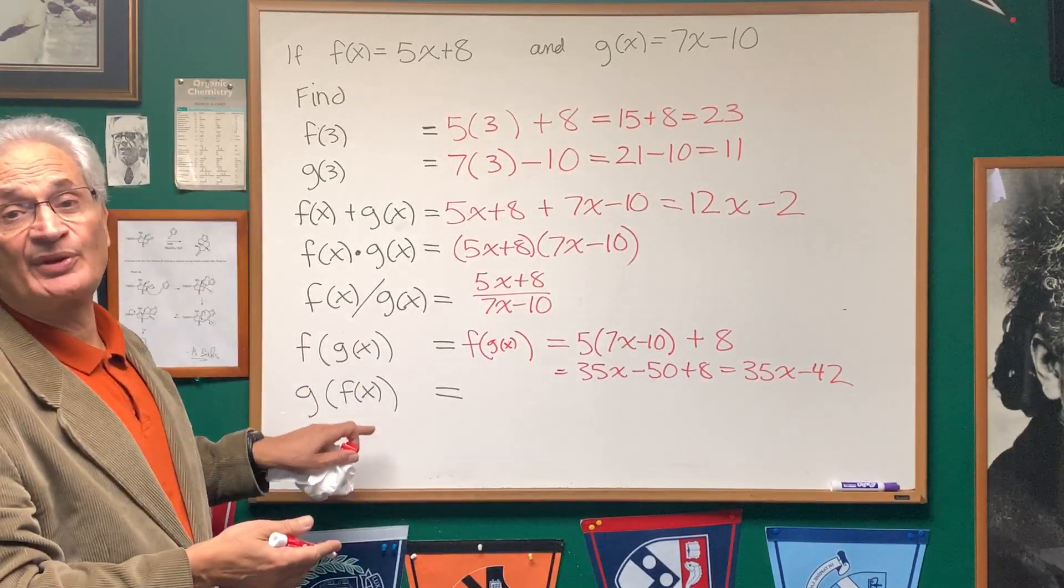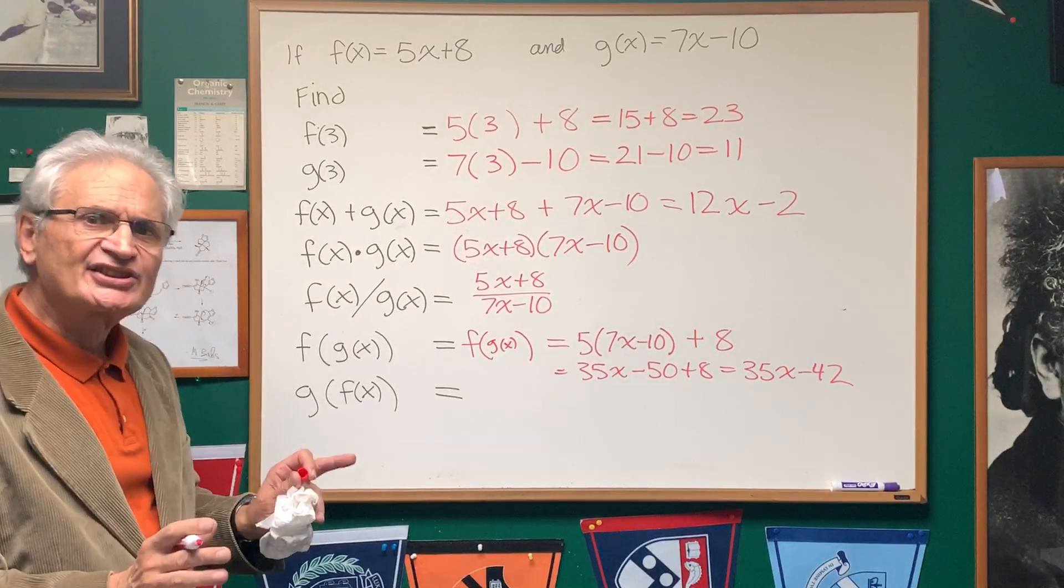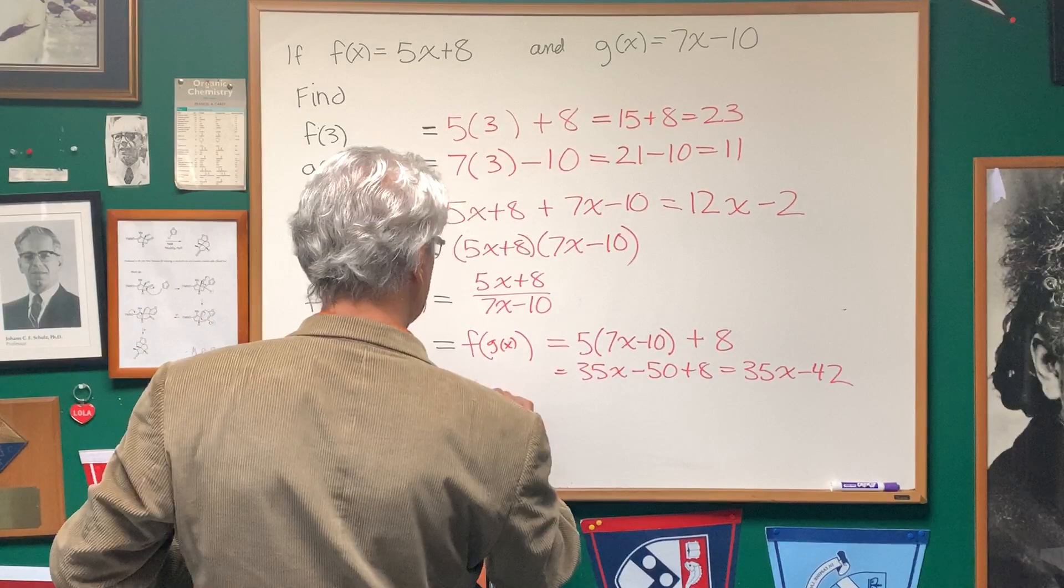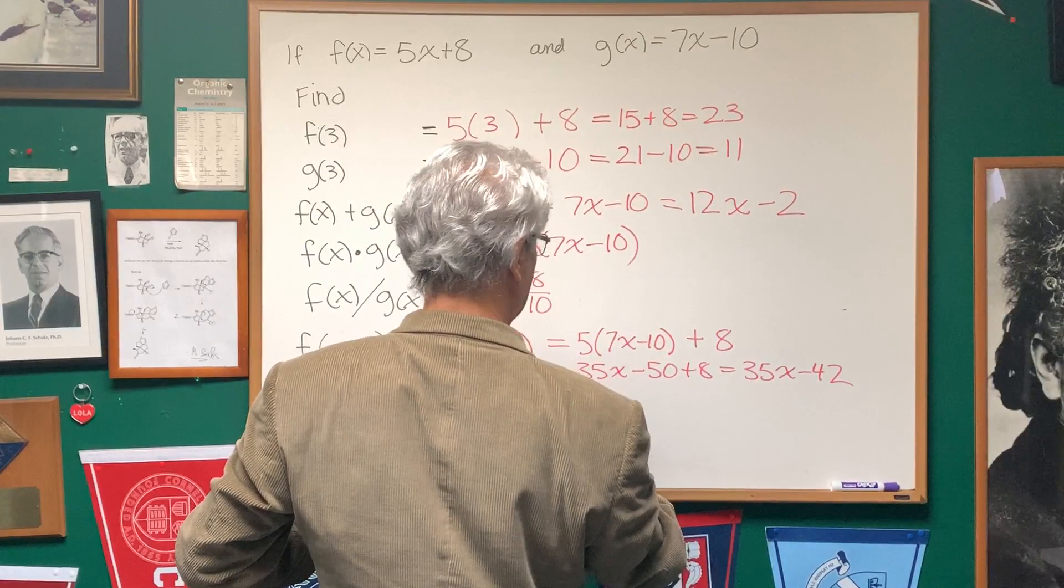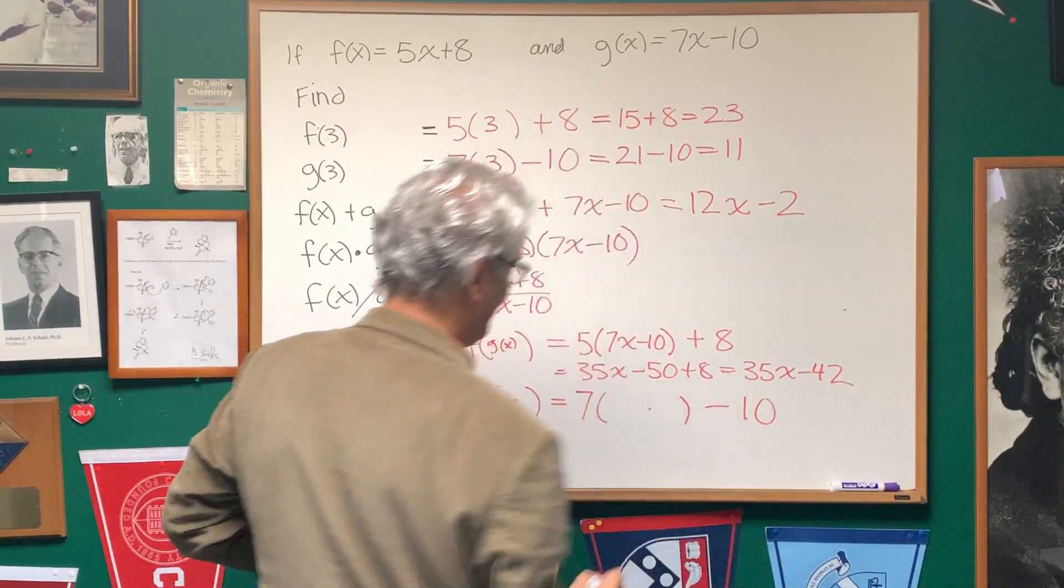We do the exact same thing with g(f(x)). Here, the g appears first. That's going to determine the main structure of the function. So we're going to write g(dot) is equal to what? I'm going to write the expression of g, 7 times dot minus 10.